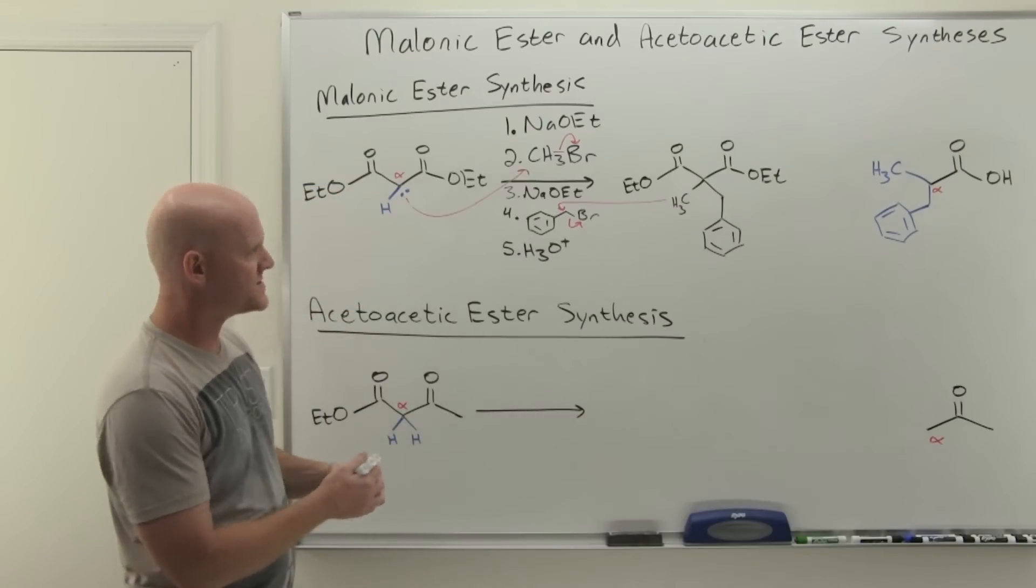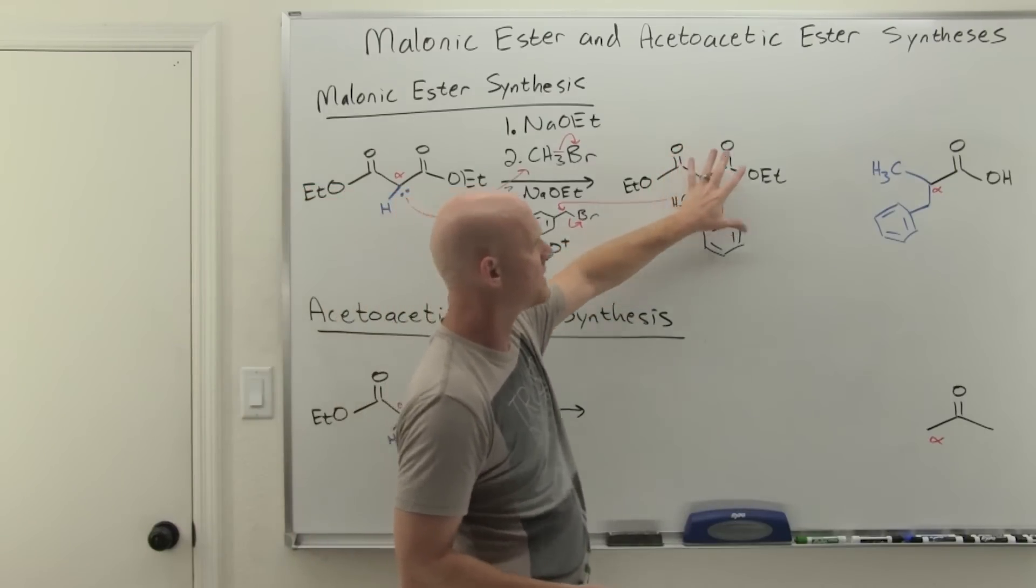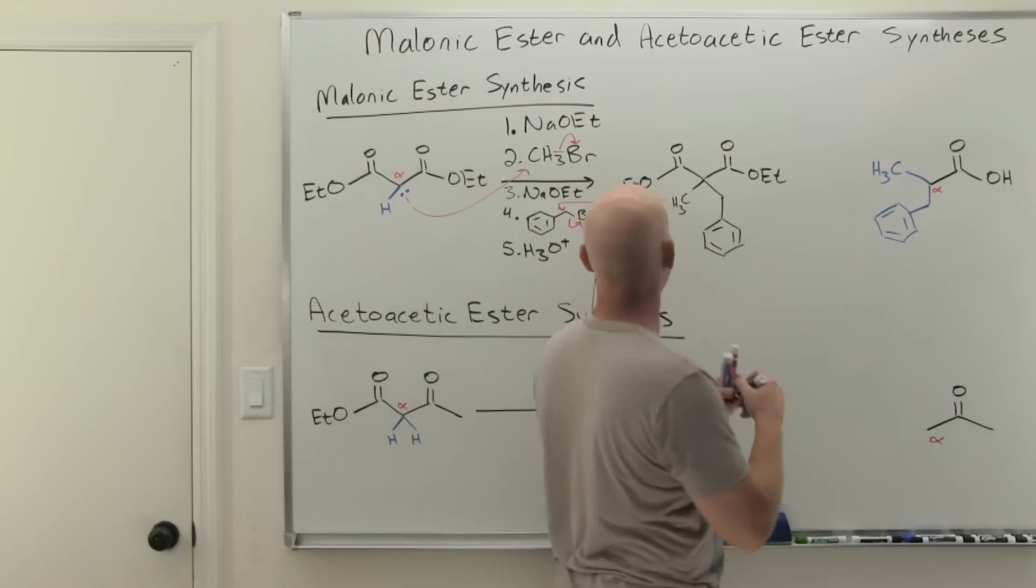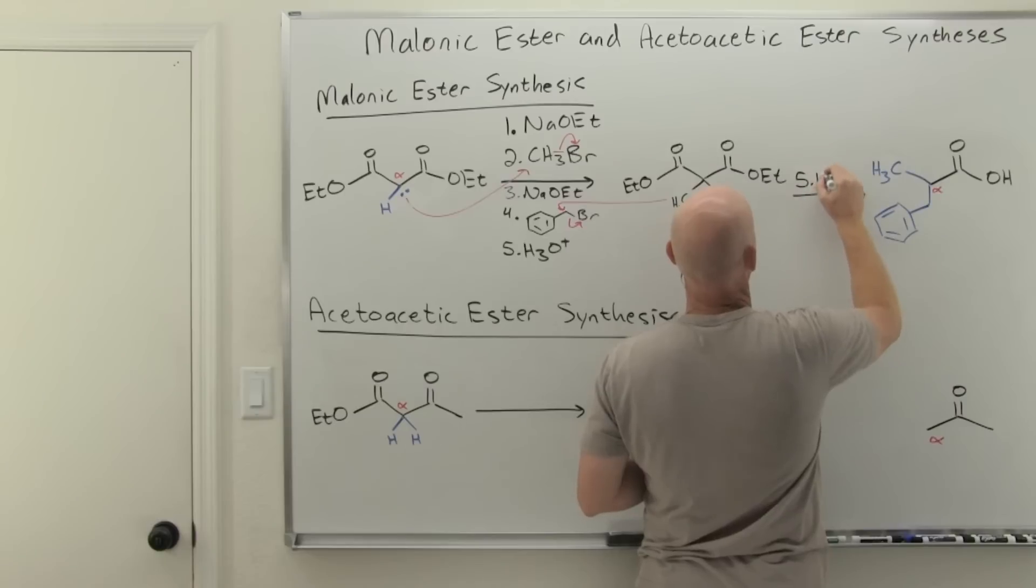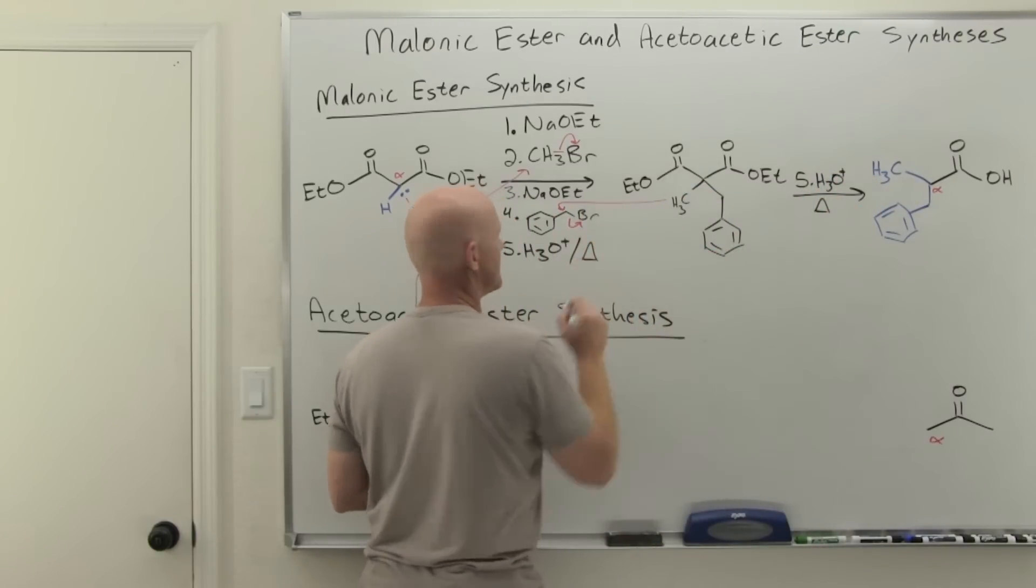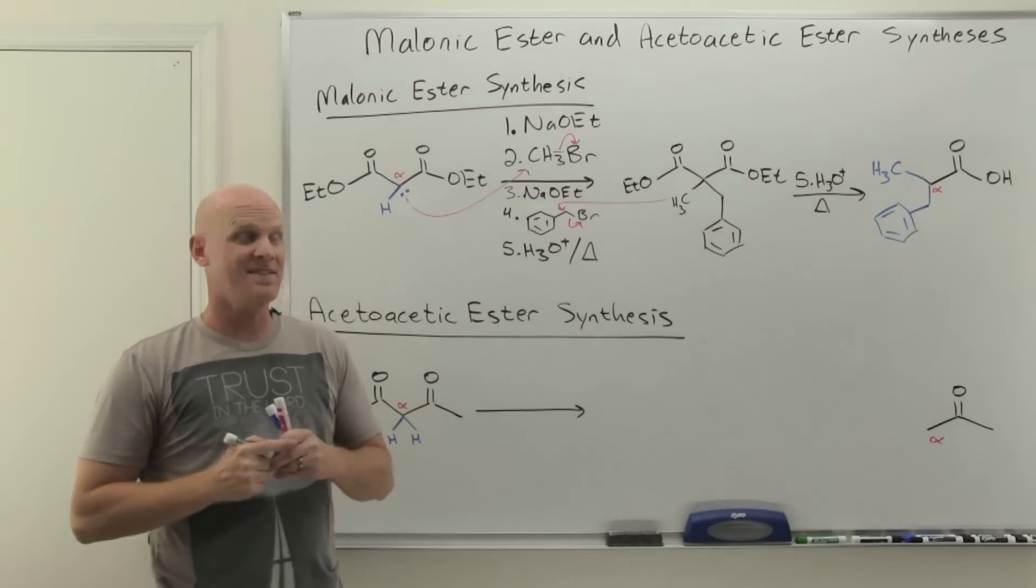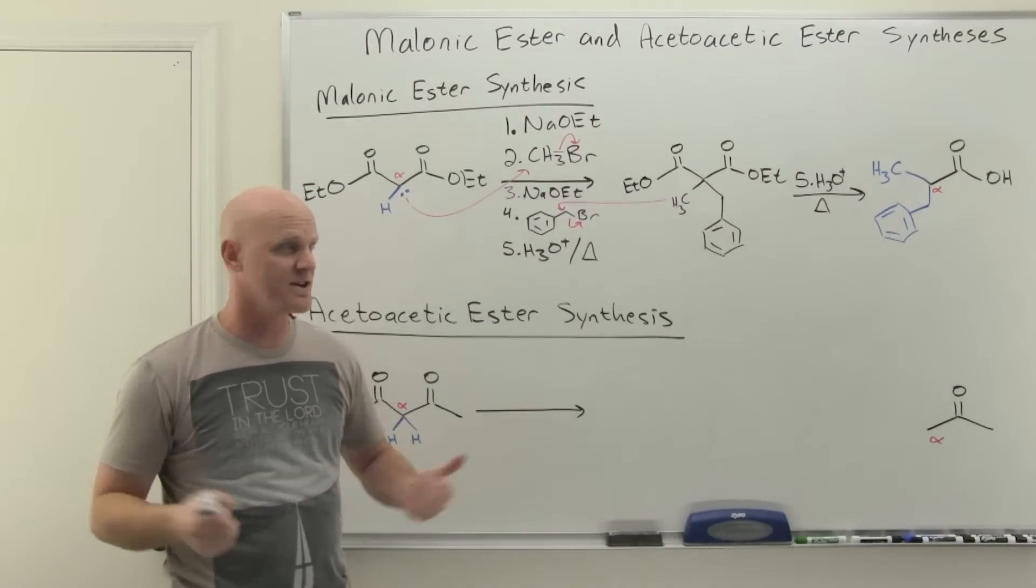But that actually turns out to be the final product. And so the question is, well, how do you get from here to this final product? Well, that's actually all, step five accomplishes all of that. And it turns out we should add some heat here as well, but it's just H3O plus and heat. That's all of step five. And that's all the magic here.